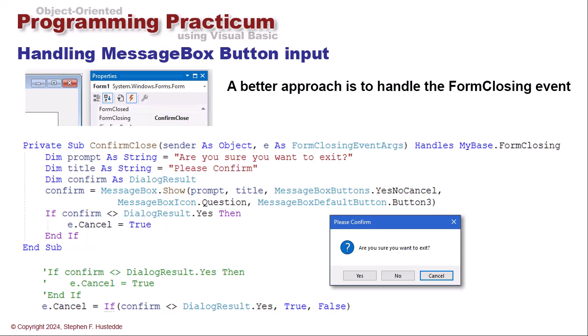Now we can do this with a ternary. So I can say e dot cancel equals if and then my boolean confirm does not equal dialog result dot yes. I'm going to set the e dot cancel to true. Otherwise, I'll set it to false. If it's set to false, they did click the yes button, then the form will continue closing and our application will end.